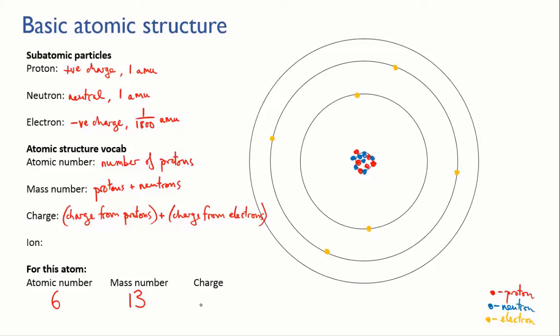In this case here, they're equal. We've got six protons, so that's a charge of plus six, and we have six electrons, so that's a charge of minus six. Six plus minus six gives us a charge of zero, so it's a neutral atom.